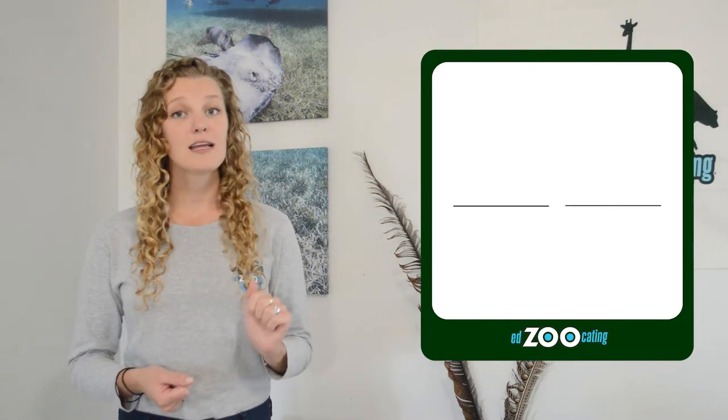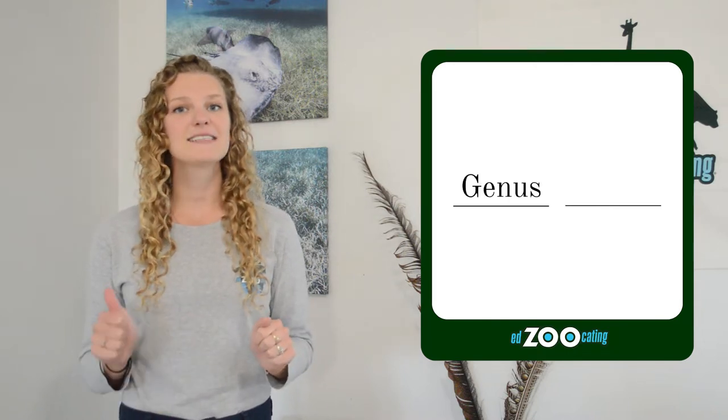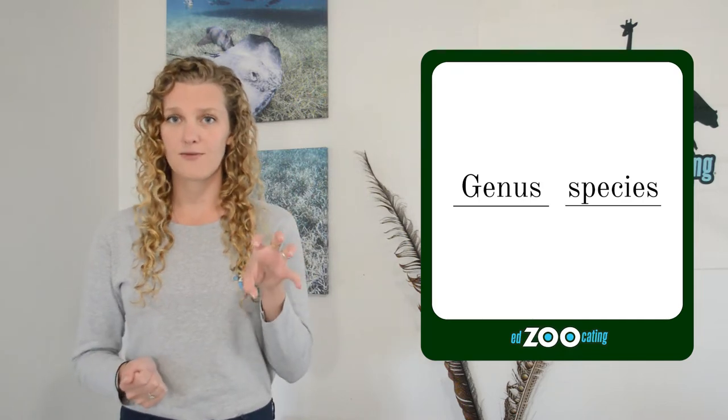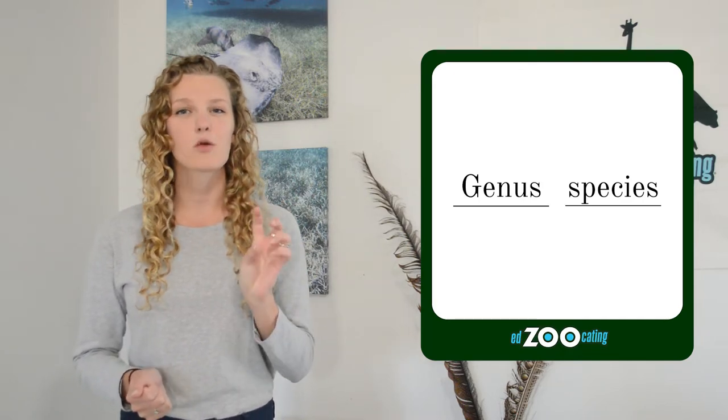A species' scientific name has two words. The first word is the genus and the second word is the species name. Animals that are really closely related are often in the same genus, so we might see two closely related animals having the same first word of their scientific name, and that tells us that those two species are very closely related.